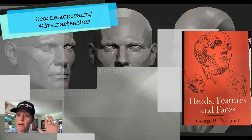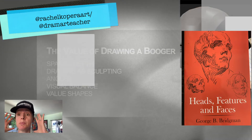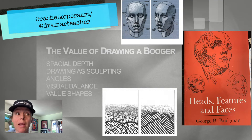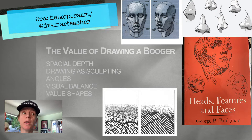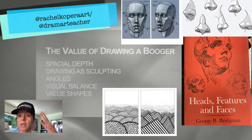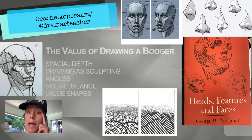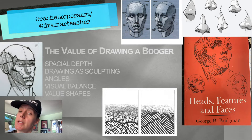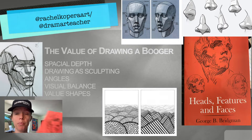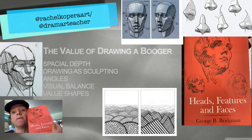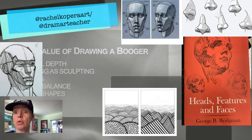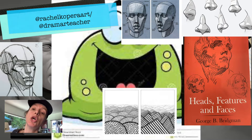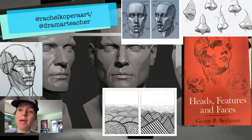In this video I'm going to focus on spatial depth and noses in drawing and sculpting. I'll talk about the importance of angles and visual balance when adding value shapes, darks and lights. I noticed my AP art kids are skipping out on noses, so we started studying Bridgeman's head, face, and features so they're less afraid of noses.